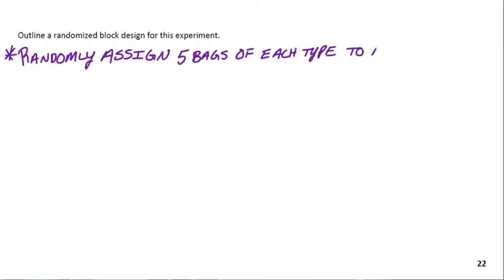Okay, so the second part here just says outline a randomized block design for this experiment. So how would we go about setting up an experiment that would actually use those blocks that would account for the different types of popcorn. So she has ten bags of each kind. There's four different kinds. So to be fair, if there's ten bags of each kind, we should randomly assign bags. Like for each kind, randomly assign five bags to each treatment.